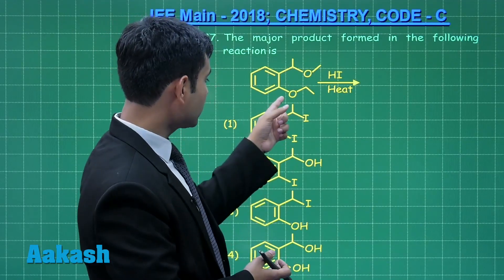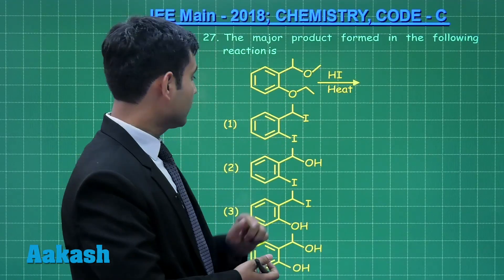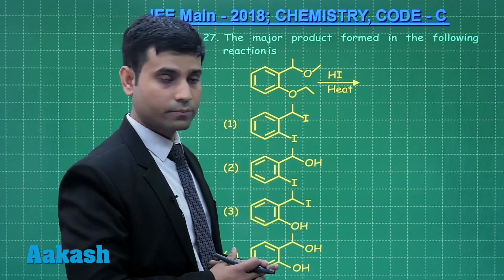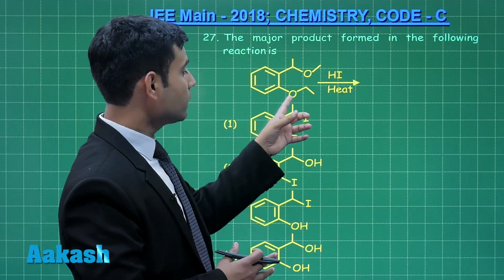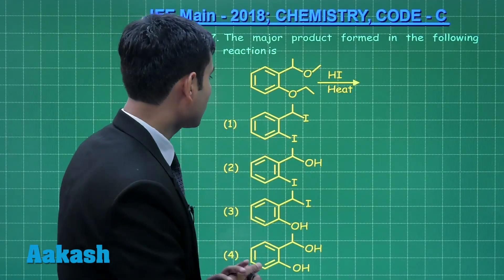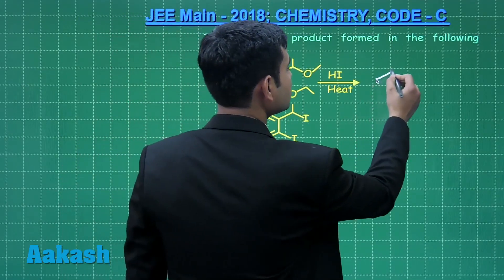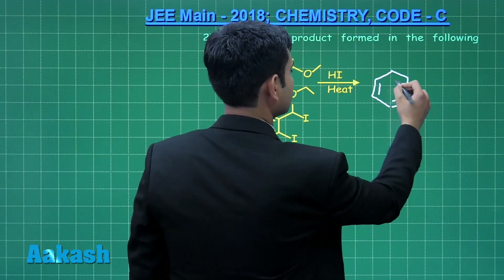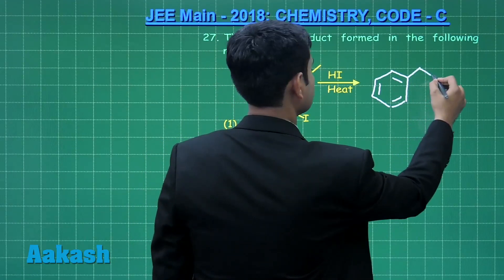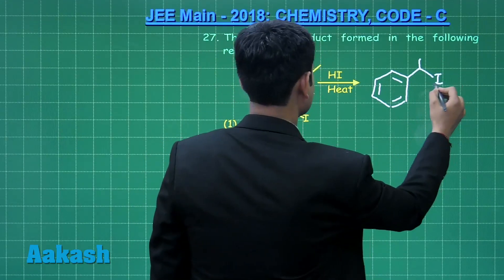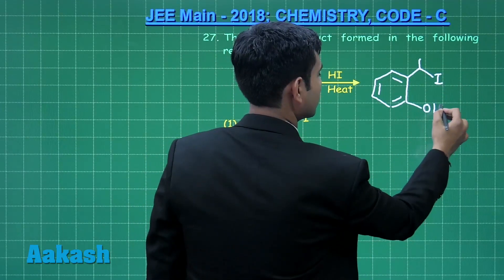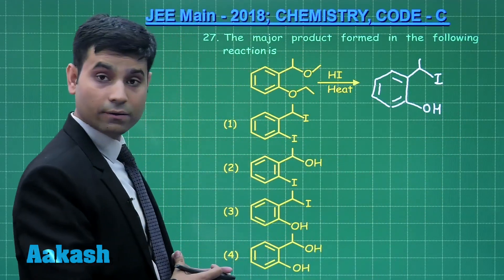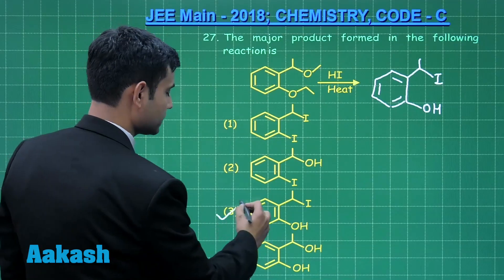Now if I consider here, this bond cannot be broken because it has some double bond character, so OH will be substituted here. So the product formed will look like this. Now let us check through the options and we can see option 3 is the correct answer.